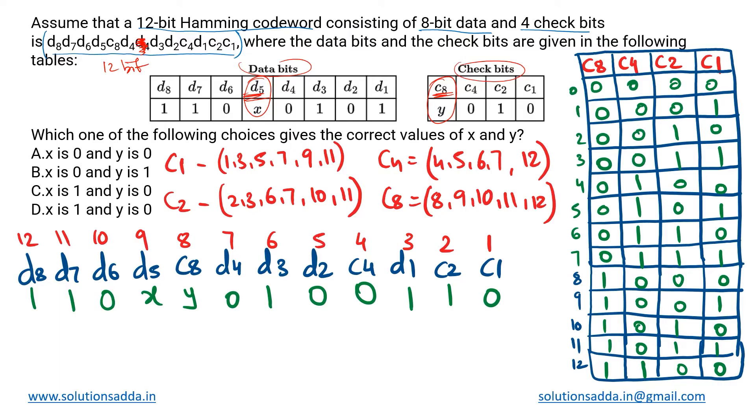So how we'll be proceeding with this: first we need to note down which check bit takes care of which position. We make this particular table in which we have the entries for c1 to c8 from right to left, and we note down all the positions from 0 till 12.